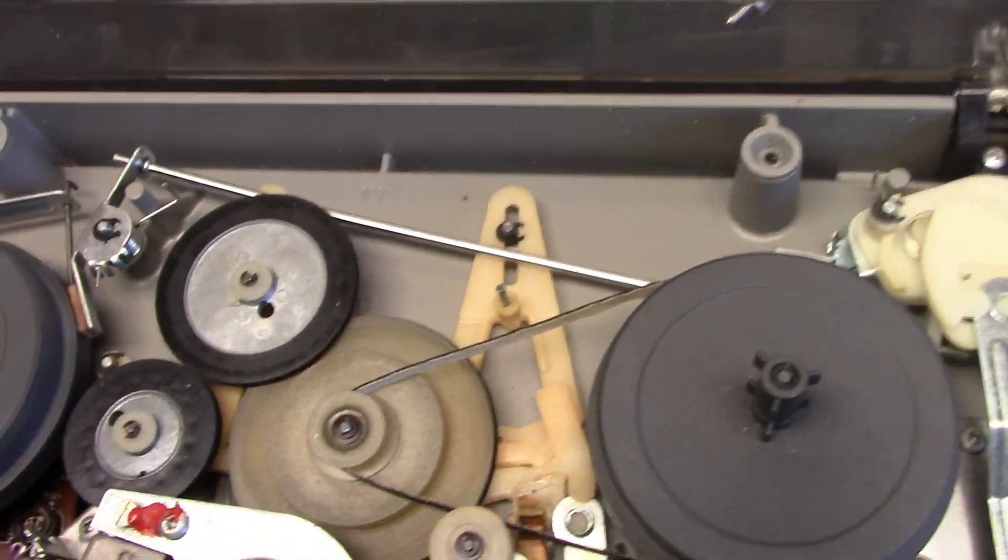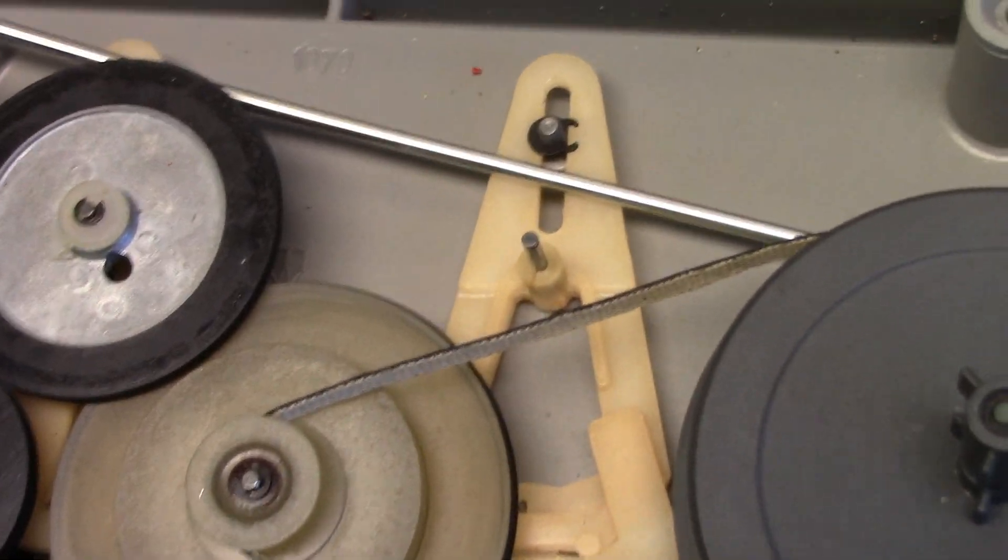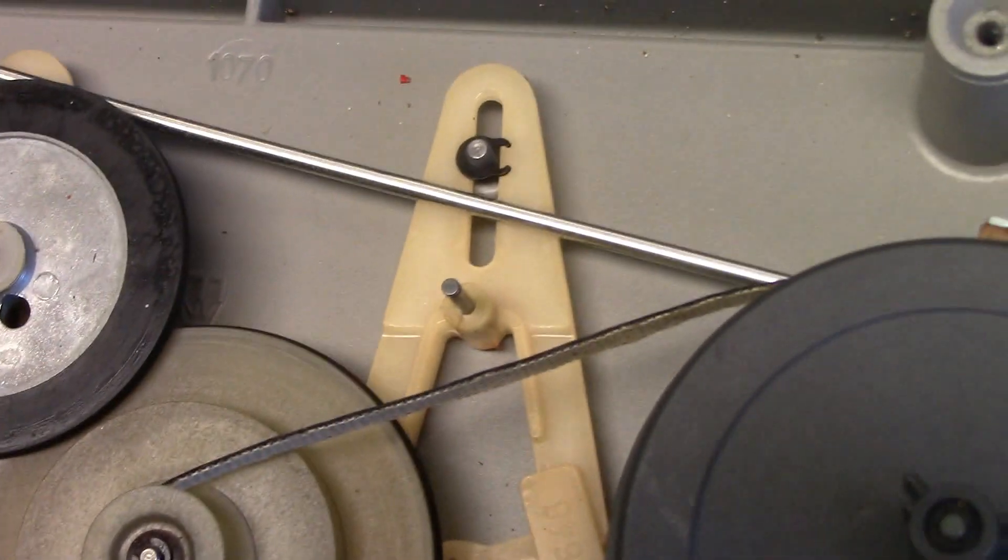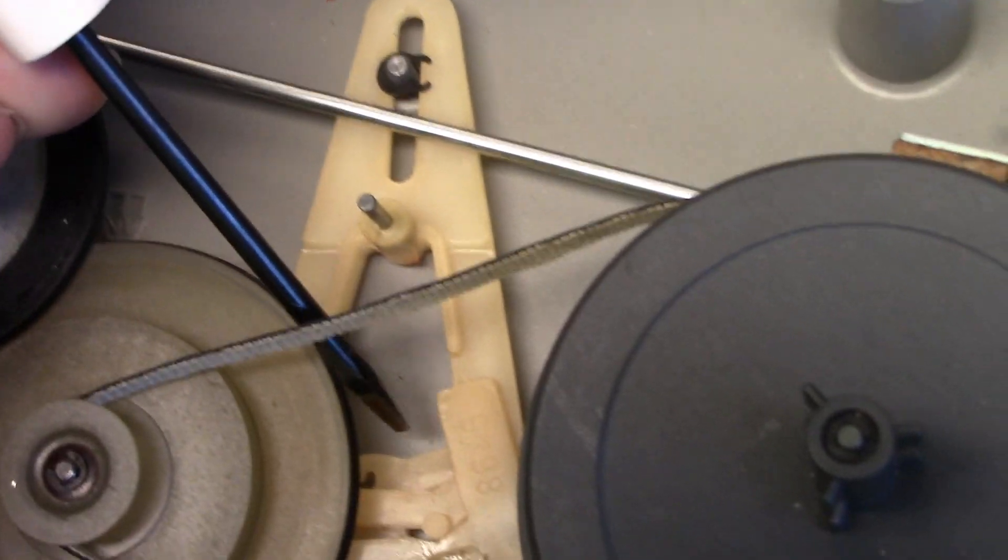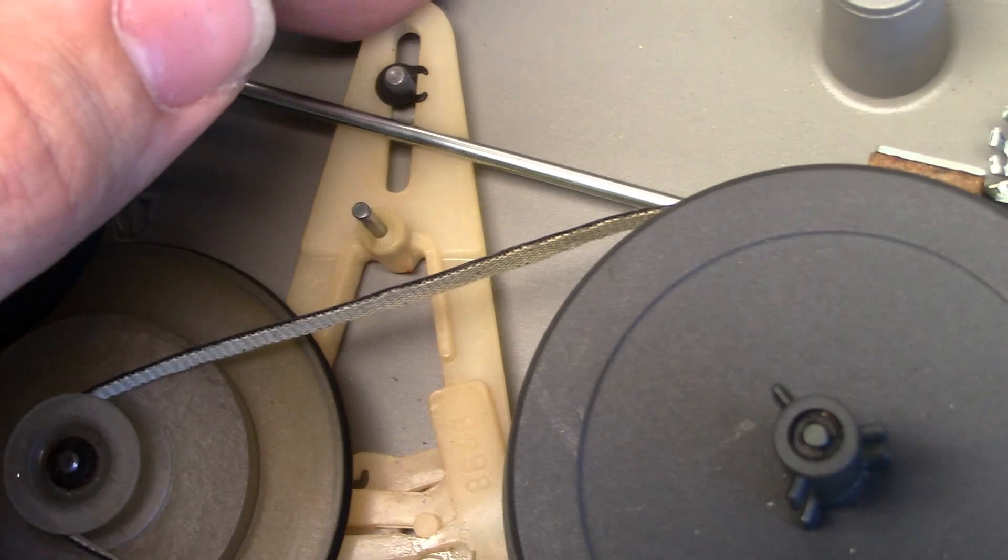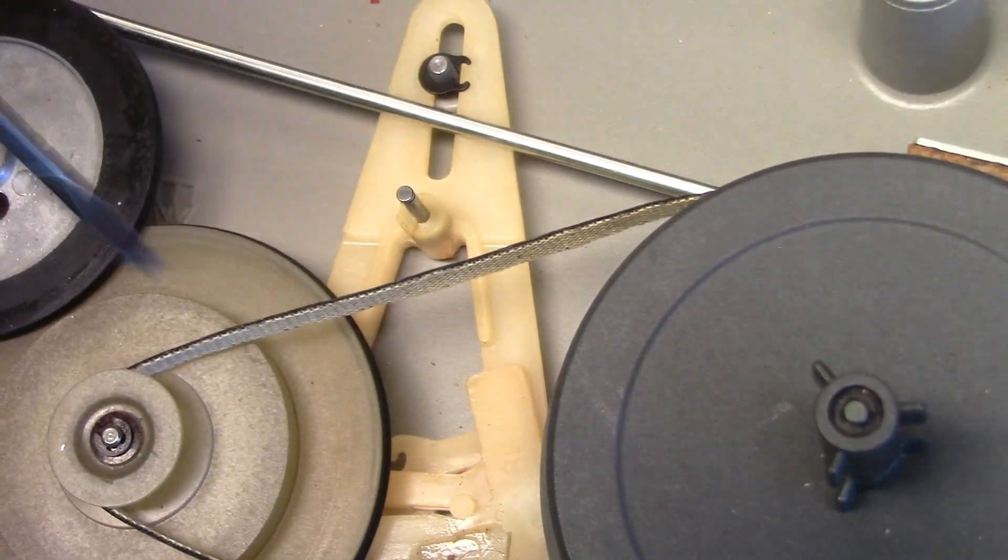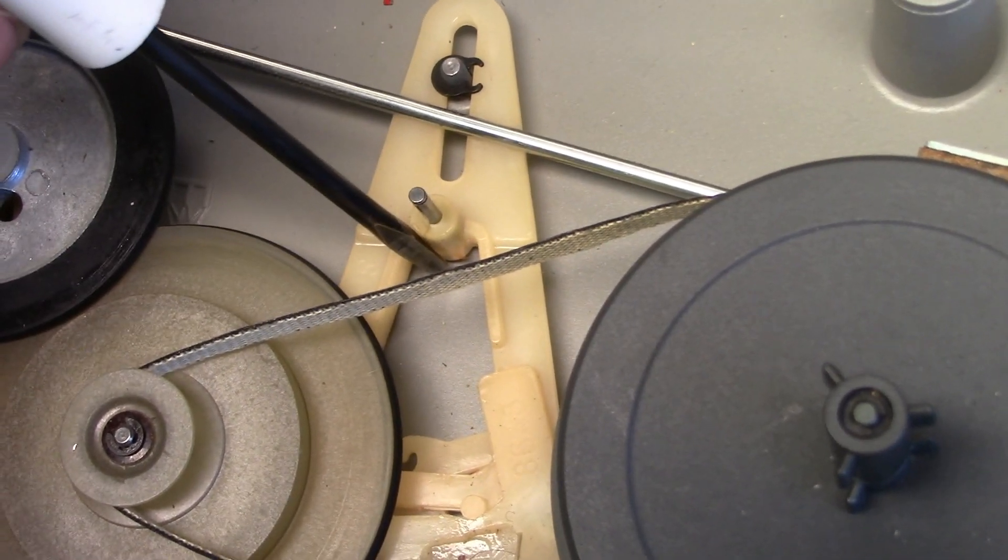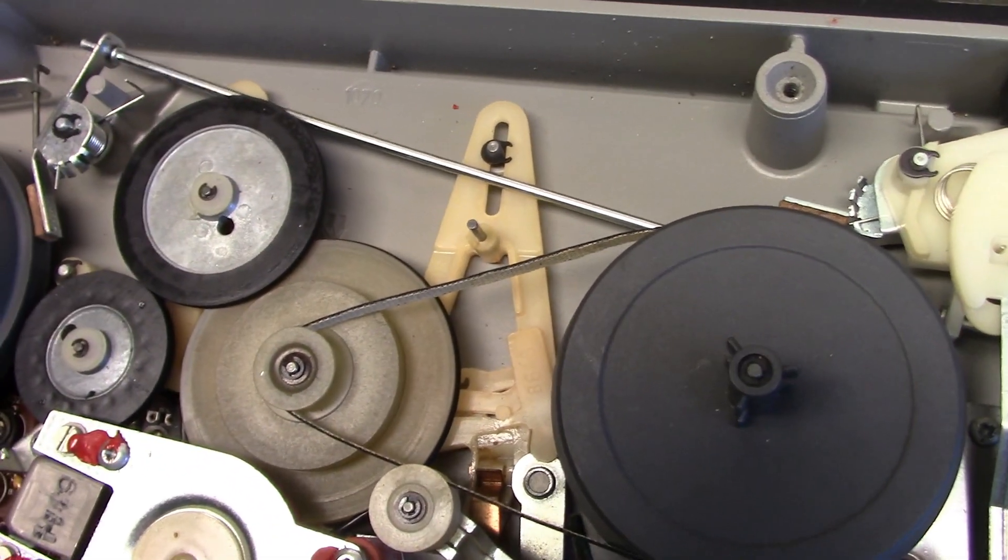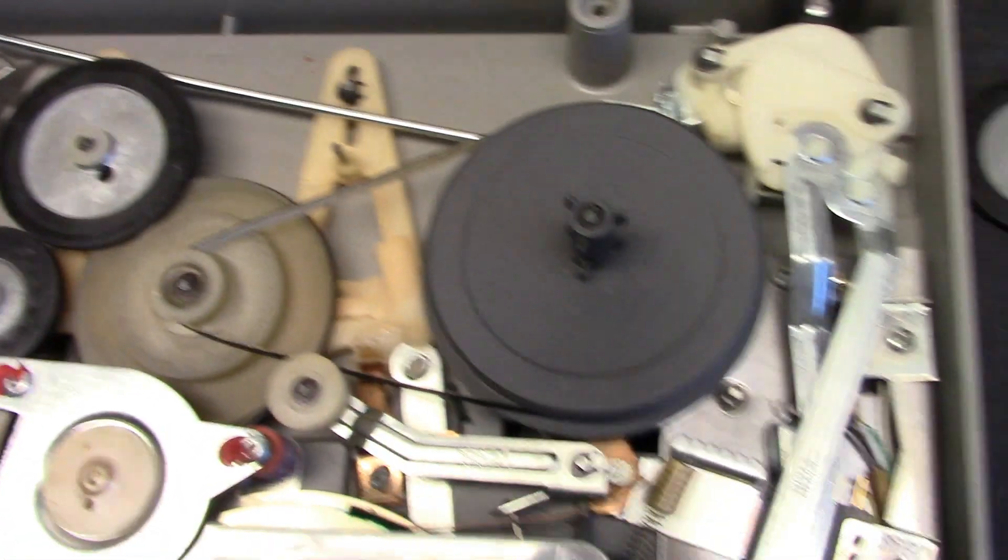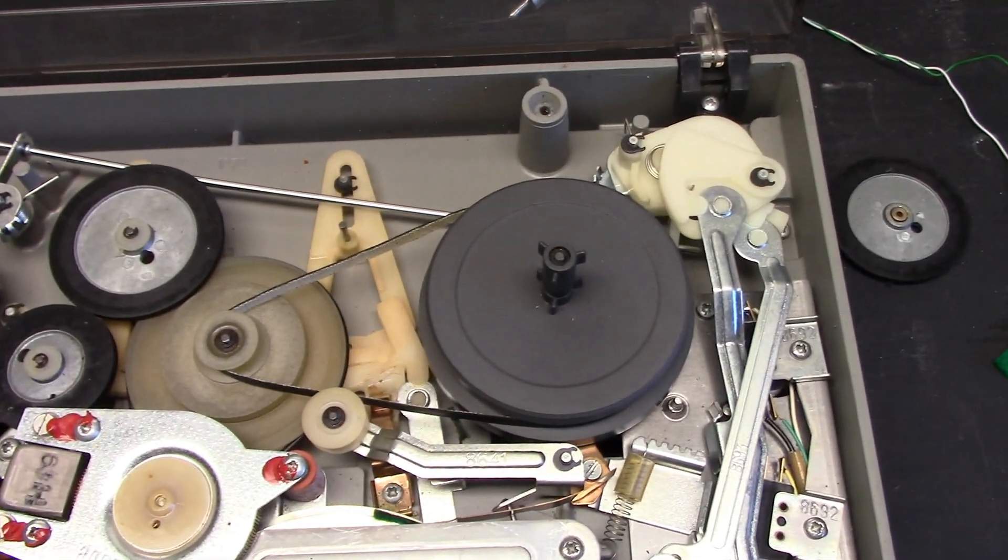I found where the spring goes. The spring that I lost goes between here and that hook to hold this down for the fast forward. Well, there was supposed to be a hook right here and it was plastic and broke off. Why do they have to use plastic parts at all in this professional machine? It's a shame.